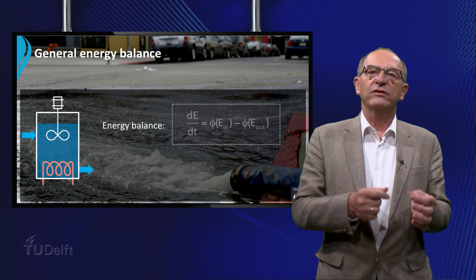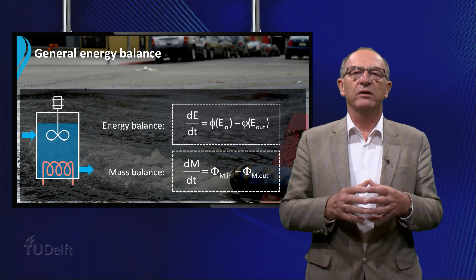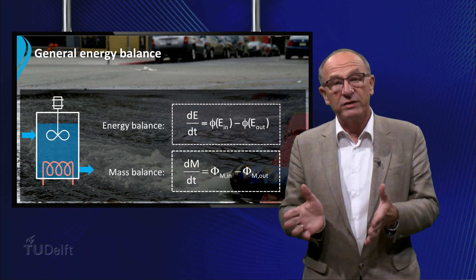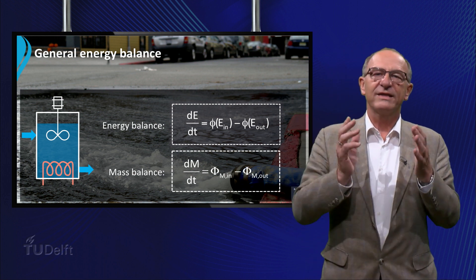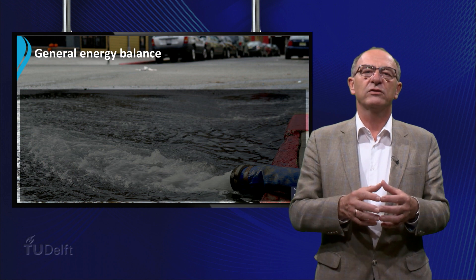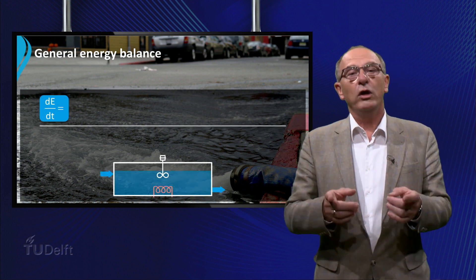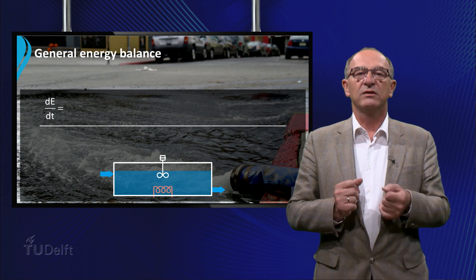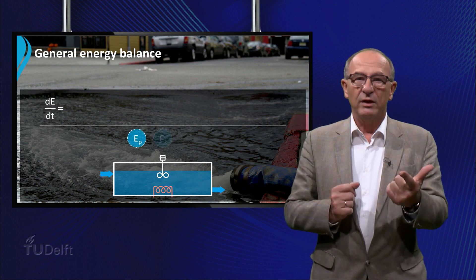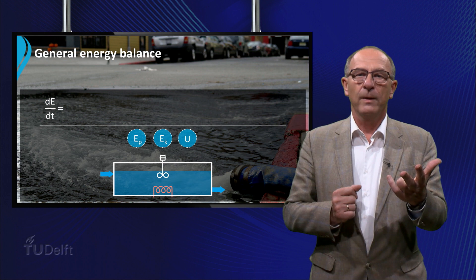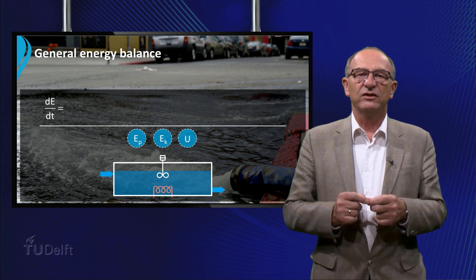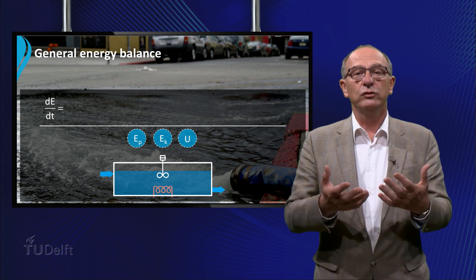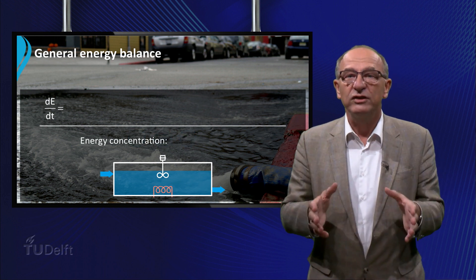The general formulation of the energy balance is similar to the mass balance. Looking at the total energy balance of the vessel, we consider three types of energy: potential, kinetic, and internal energy. If we sum these energies per unit of mass, we can introduce the so-called energy concentration E.